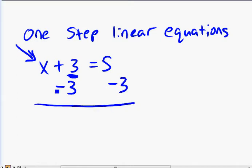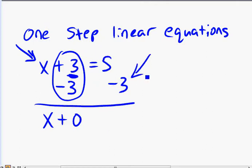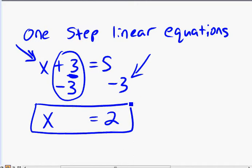And this way, on the left side, a positive 3 minus 3 will give you 0, so x plus 0. And since whatever we do on the left side, we do to the right side, we also need to subtract 3 here. 5 minus 3 is 2. And then we have x plus 0 equals 2. But because it's 0, we don't need to write it. The answer is just x equals 2.